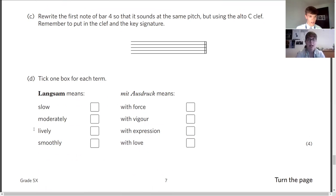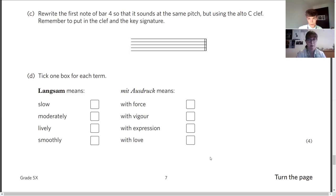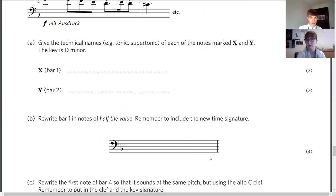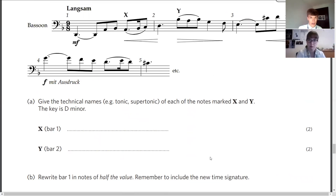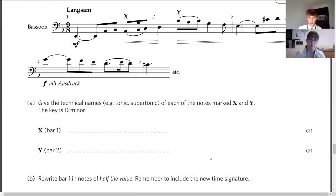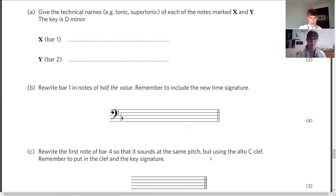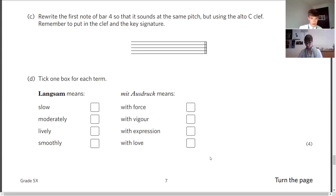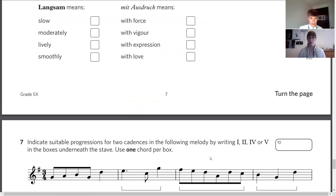And D: again, multiple choice. These are German terms. Langsam: slow, moderately, lively, smoothly? And then mit Ausdruck. That mit means with, as they all say, and force, vigour, expression or love. If you're not sure, have a guess. Try and think what would make the most sense as well. Look at the music and try and think which of these looks like it could fit. Don't forget that also with some of these terms that are in Italian and German, the words might actually give a clue, because they might have shared roots in another language, for example. Might not be the case here.